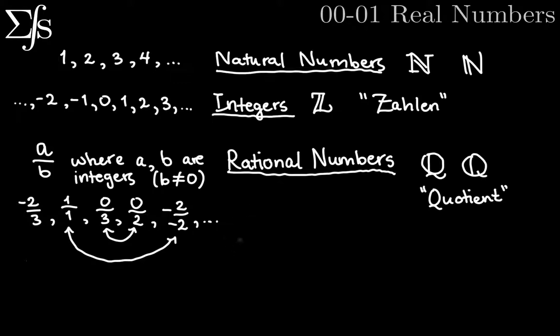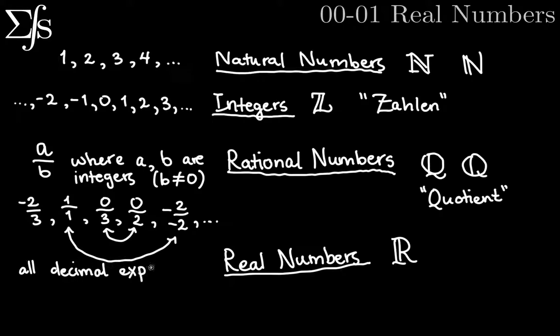So the last step up is what we've been building up to this whole time, are what are called the real numbers. And we'll denote that with a double stroke R, like that. R standing for reals. And those are going to be all decimal expansions. So what do I mean by decimal expansions? Well, that could be anything like 0.333 repeating. So that would be one-third. But it's also something like 1.1234 and so on.